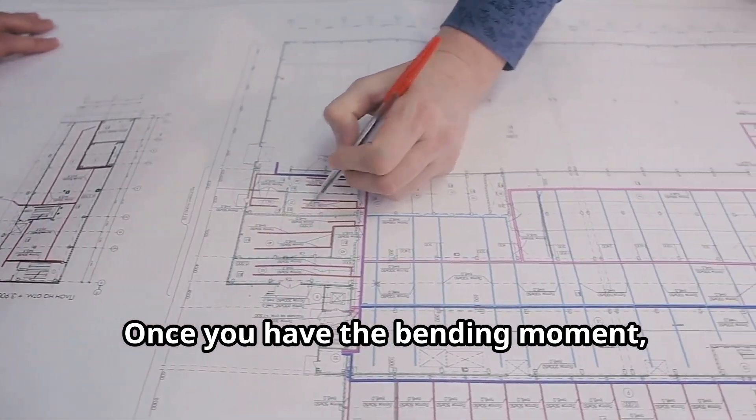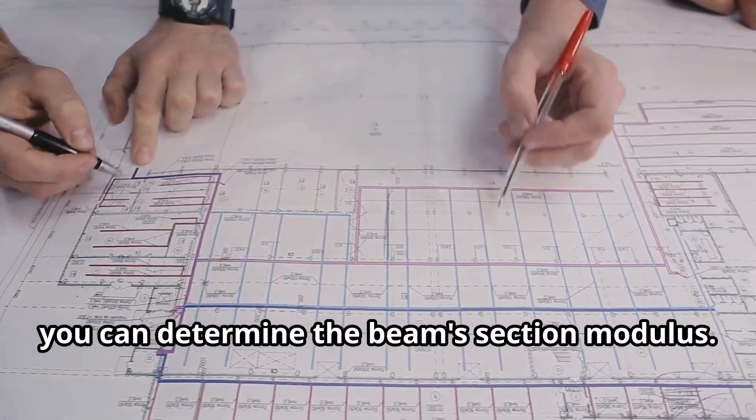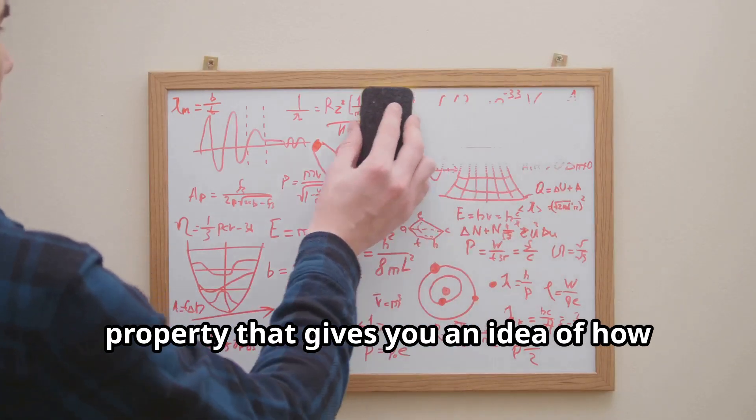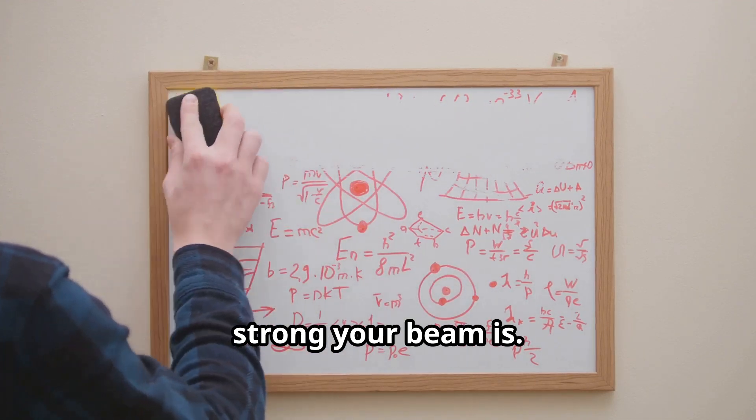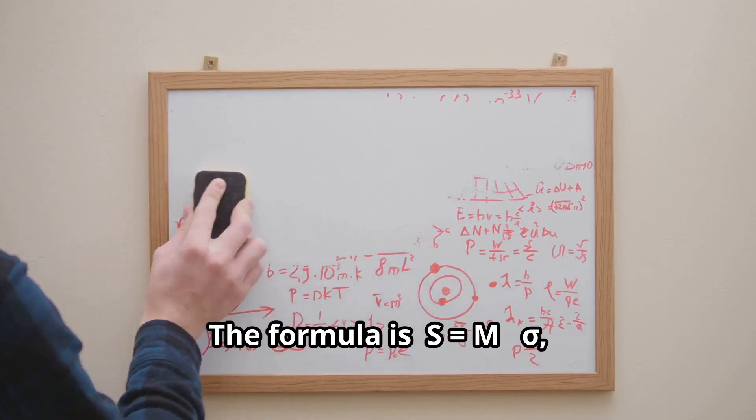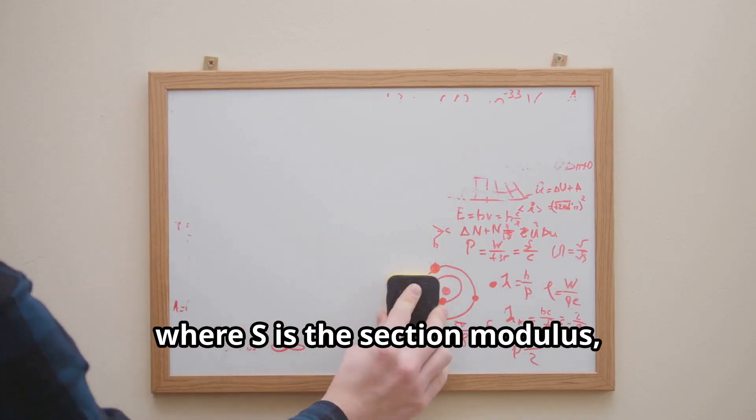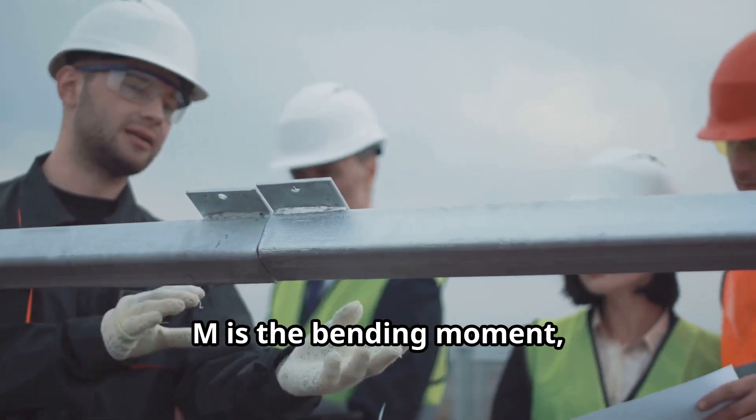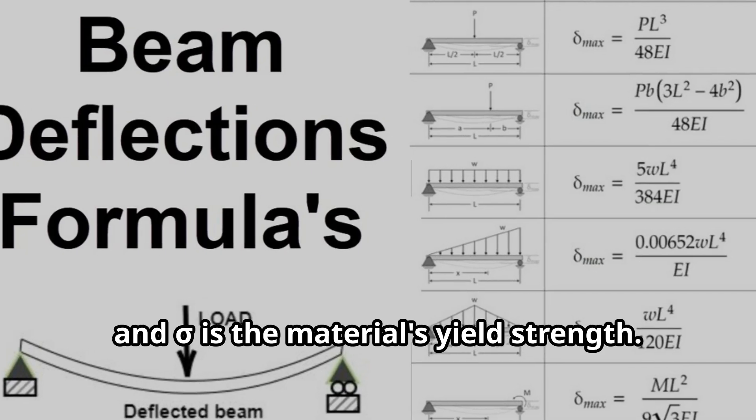Once you have the bending moment, you can determine the beam's section modulus. The section modulus is a geometric property that gives you an idea of how strong your beam is. The formula is S = M / σ, where S is the section modulus, M is the bending moment, and σ is the material's yield strength.